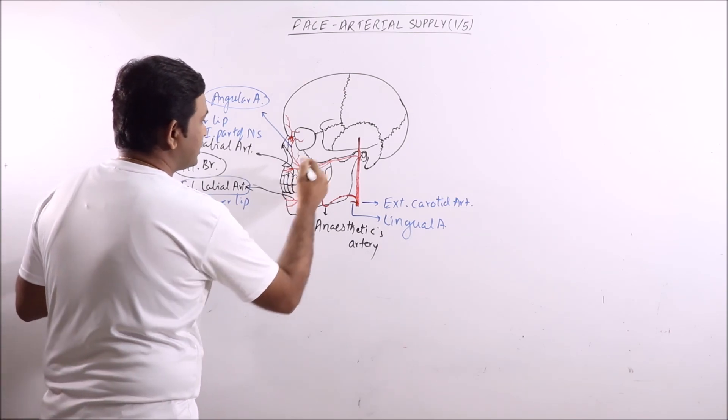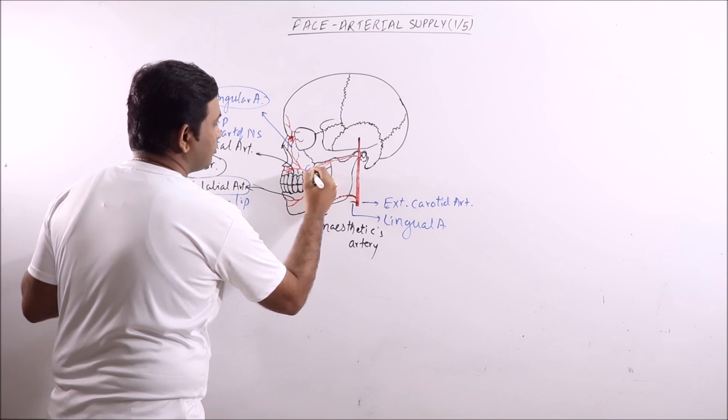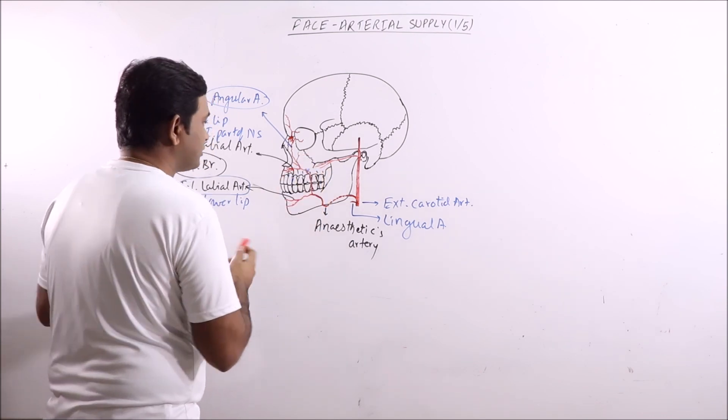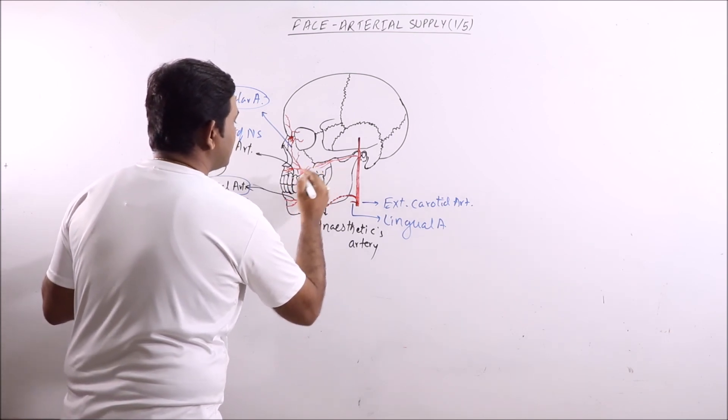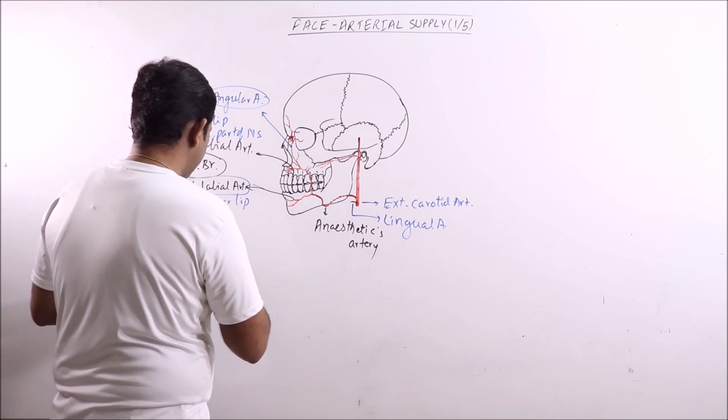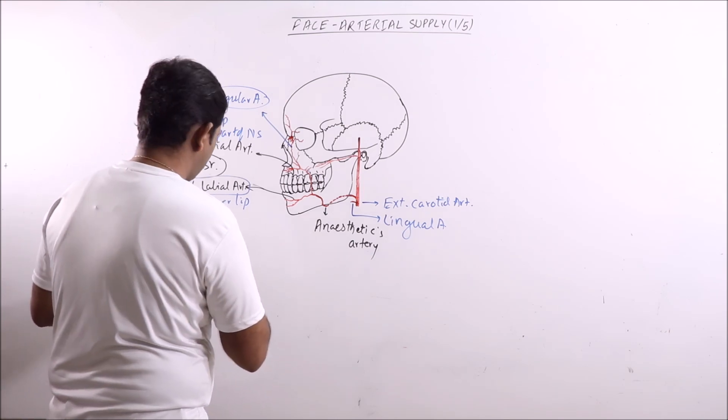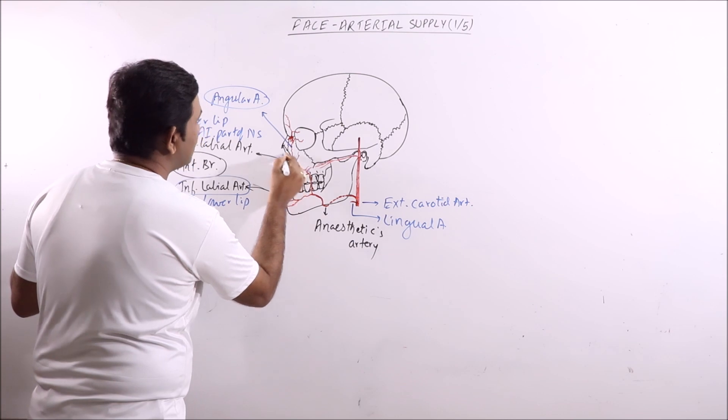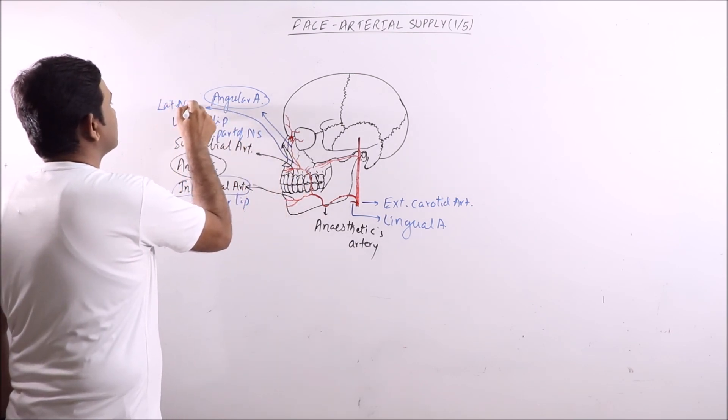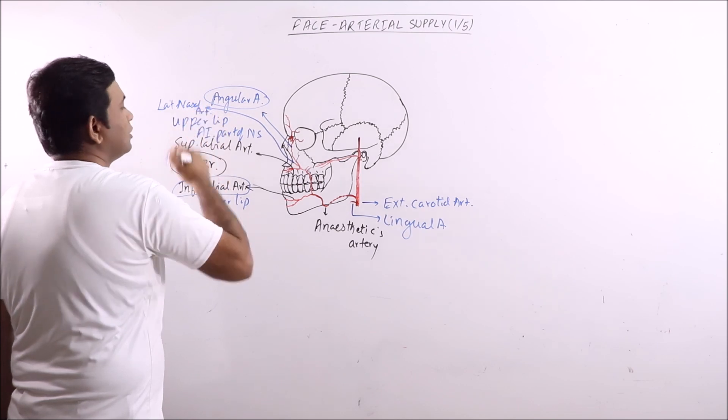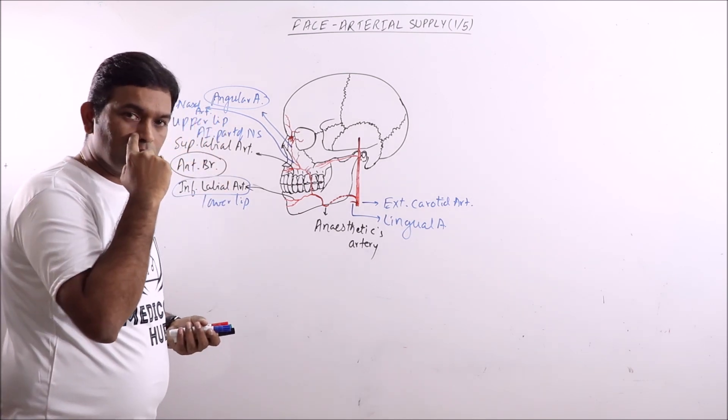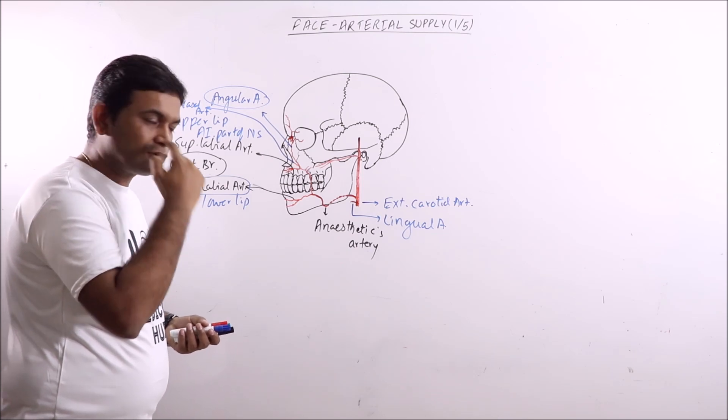Many posterior branches are also given by the facial artery, but these are small and unnamed. One additional branch is also there, that is lateral nasal. This lateral nasal artery supplies the lateral part of the nose, nasal ala, and the dorsum of the nose.